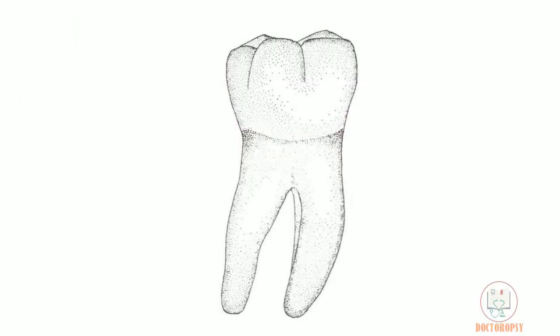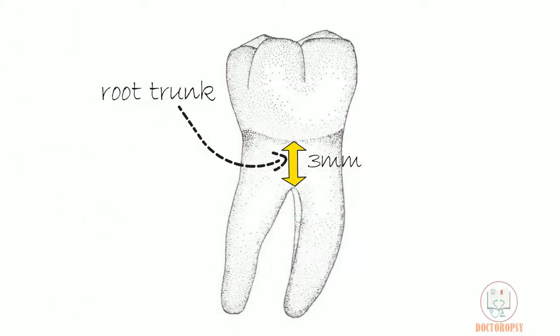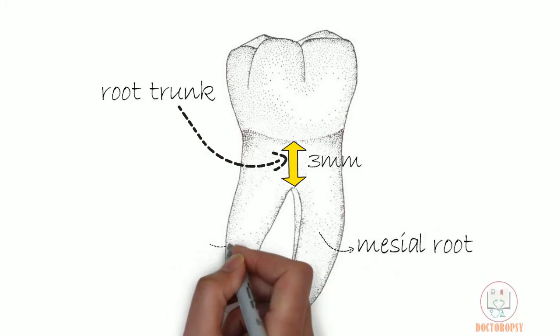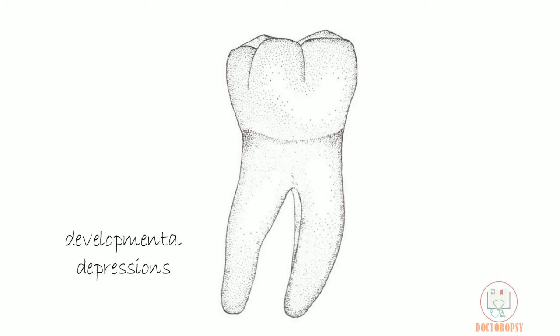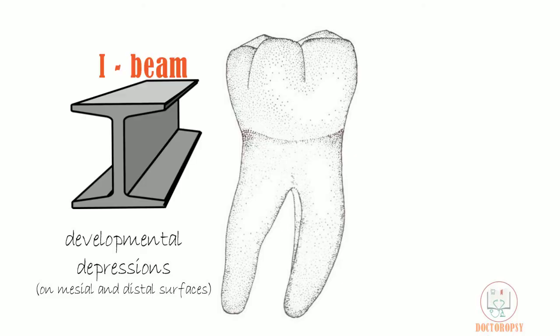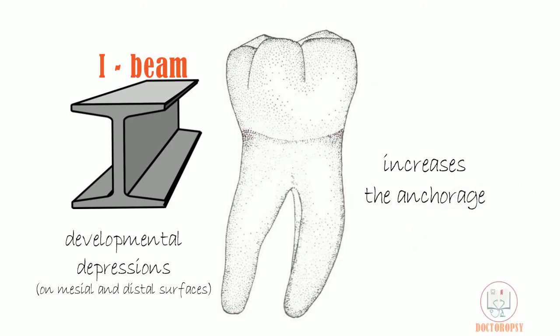Coming to the roots: the root trunk is 3 mm, which then bifurcates into the mesial root and distal root. Both roots have a distal curvature, and this curvature is more pronounced in the mesial root. Both roots have developmental depressions on their mesial and distal surfaces, giving them an I-beam shape, which increases the anchorage of the roots.